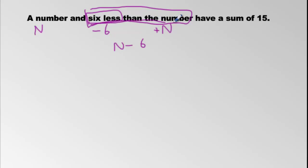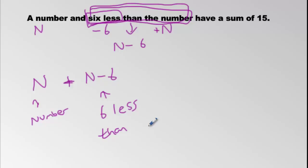We have 6 less than a number. That's this part. This whole thing here, this all becomes that. So we have a number and we have 6 less than a number. So we have two numbers here. We have the first number and we have 6 less than it. Have a sum of 15. Sum means adding. So we're going to add these two numbers. We're going to add the number and we're going to add the 6 less than a number. This is the number.